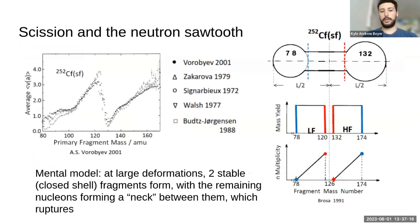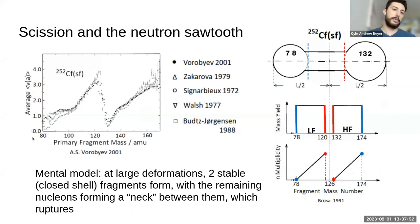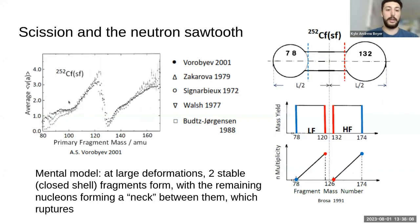One important thing to build a mental model for is the strong dependence on fragment mass of the number of neutrons emitted by that fragment. We see this really interesting sawtooth-like behavior, where the amount of excitation energy available to a given fragment is strongly dependent on fragment mass. A nice mental model to explain this is that right before scission, we form two spherical closed-shell systems — pre-fragment cores — and they share this neck of nucleons between them.